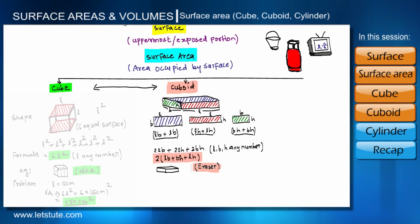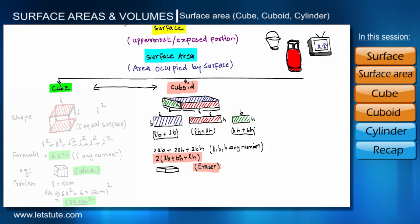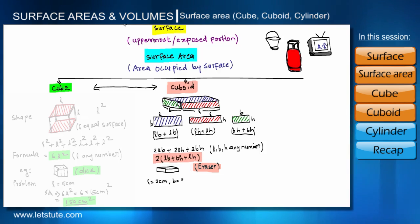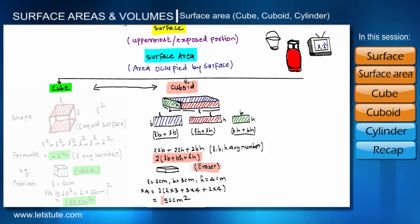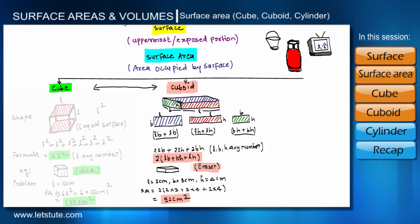An eraser is the best example of a cuboid. Let us solve a problem: suppose we have an eraser with length L = 2 cm, breadth B = 3 cm, and height H = 4 cm. Using the formula 2(LB + BH + LH) = 2(6 + 12 + 8) = 2 × 26 = 52 cm². So the total surface area of this eraser is 52 cm².